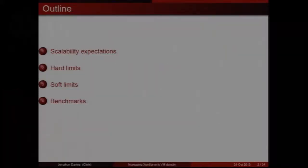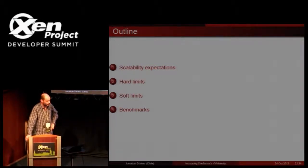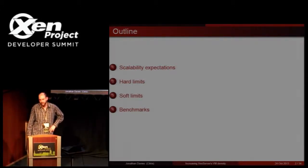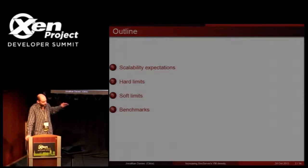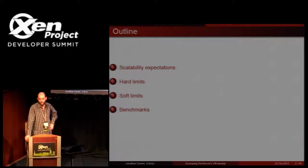I'm going to start by talking about expectations from our users — we tend to call our users customers. Their expectations are important because they're giving us money if we can meet them. I'm going to explain how we met those expectations by removing some of the hard limits and soft limits to achieve higher VM densities, and then if we've got time, we'll look at some benchmarks that quantify these improvements.